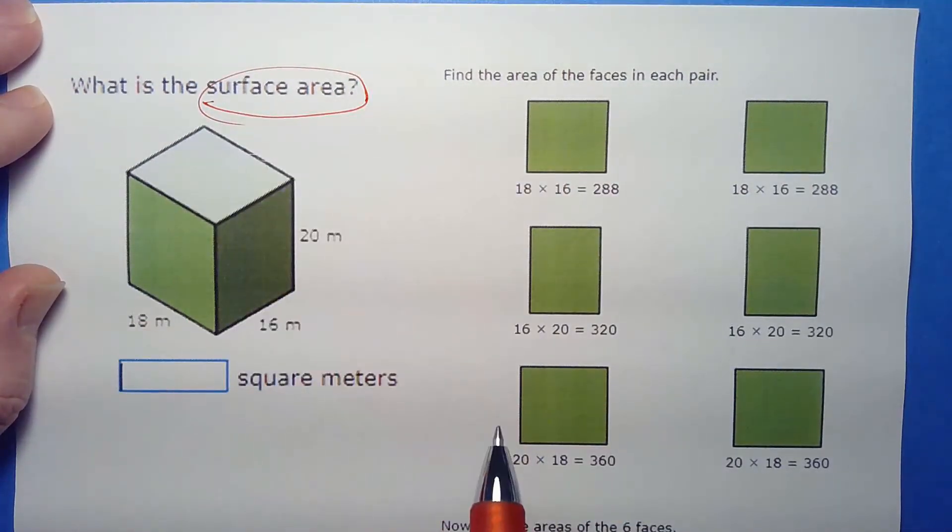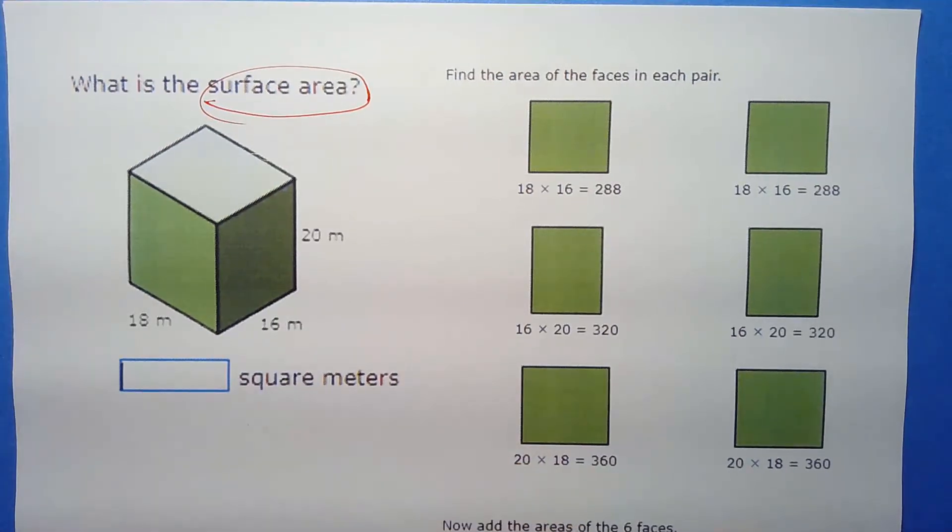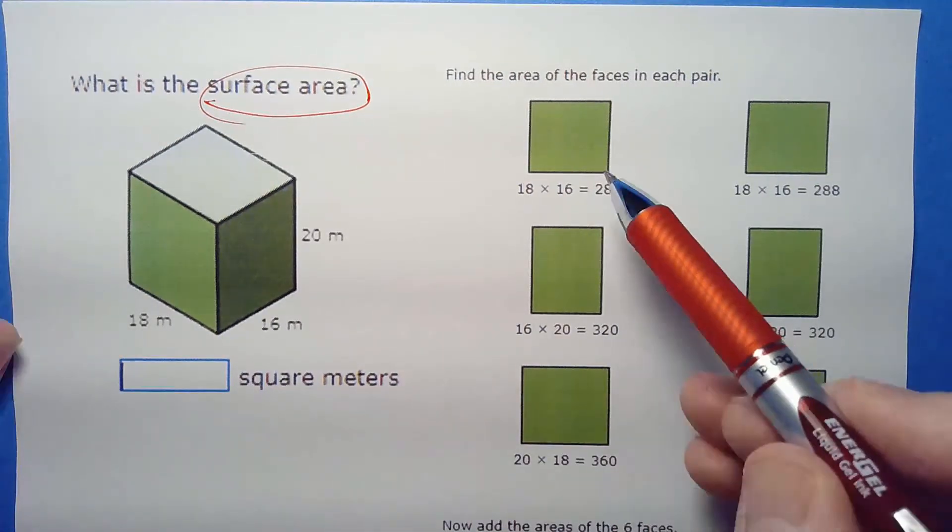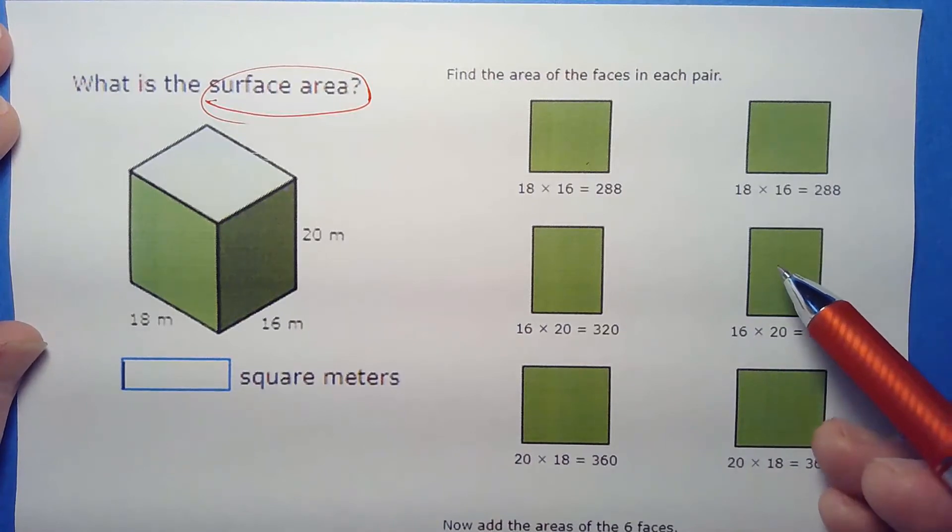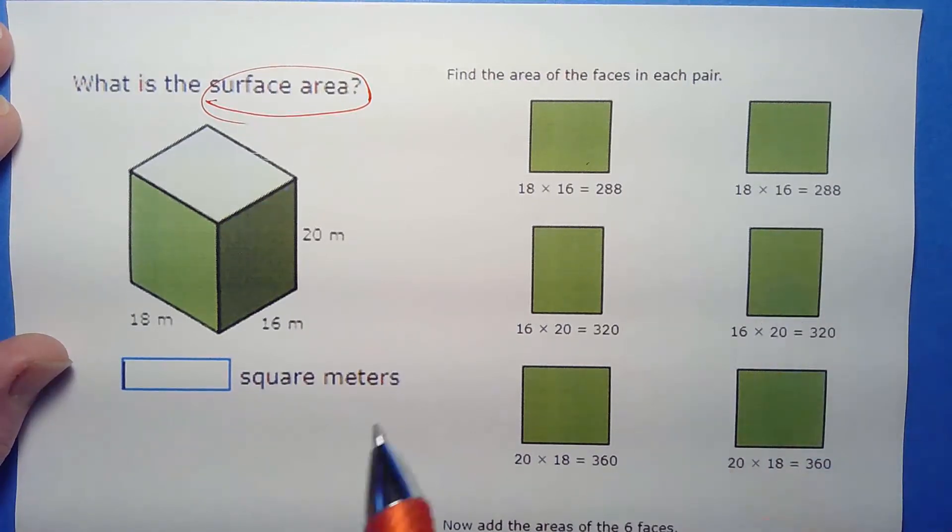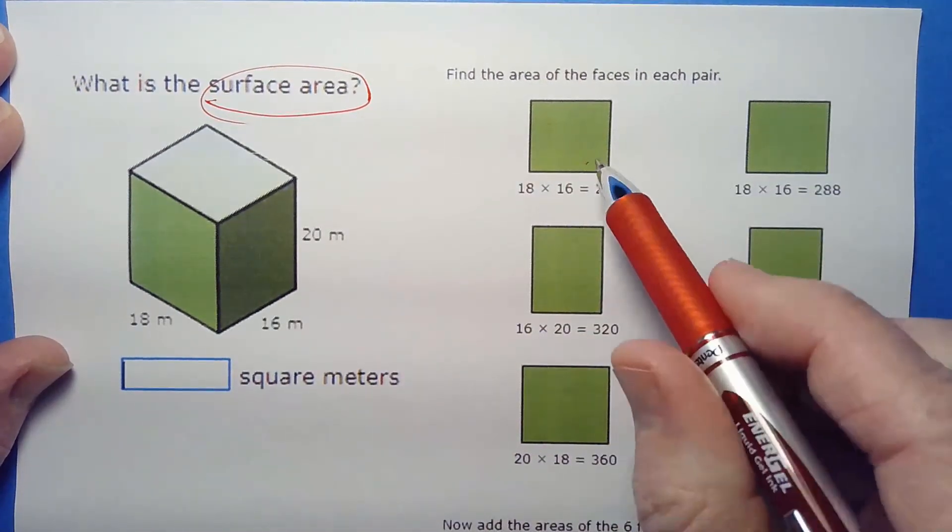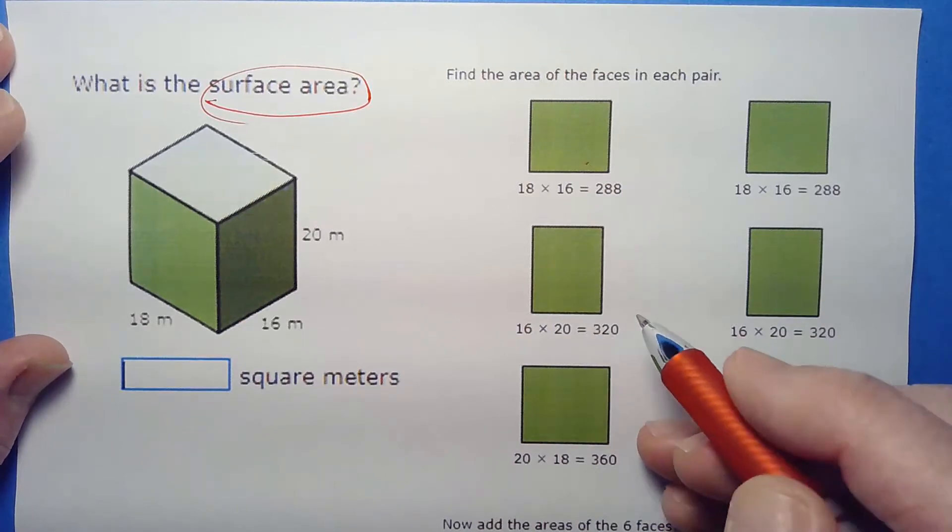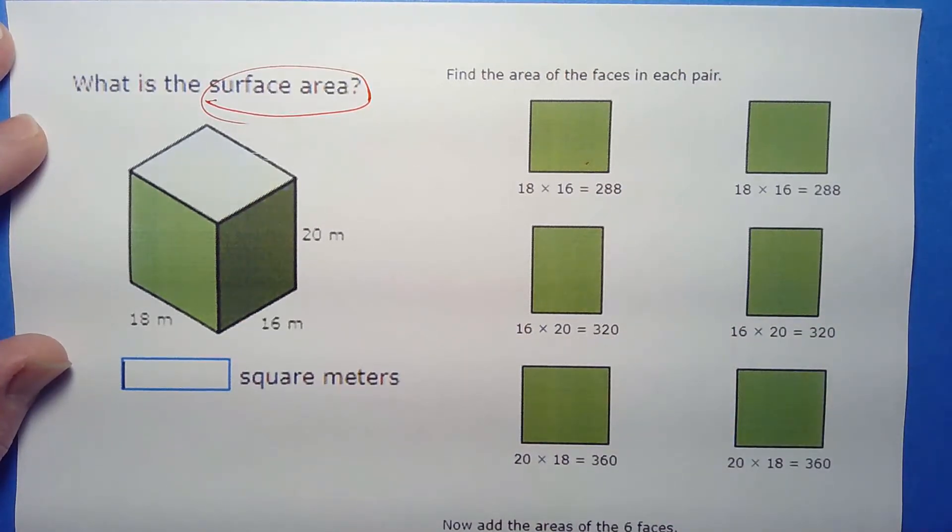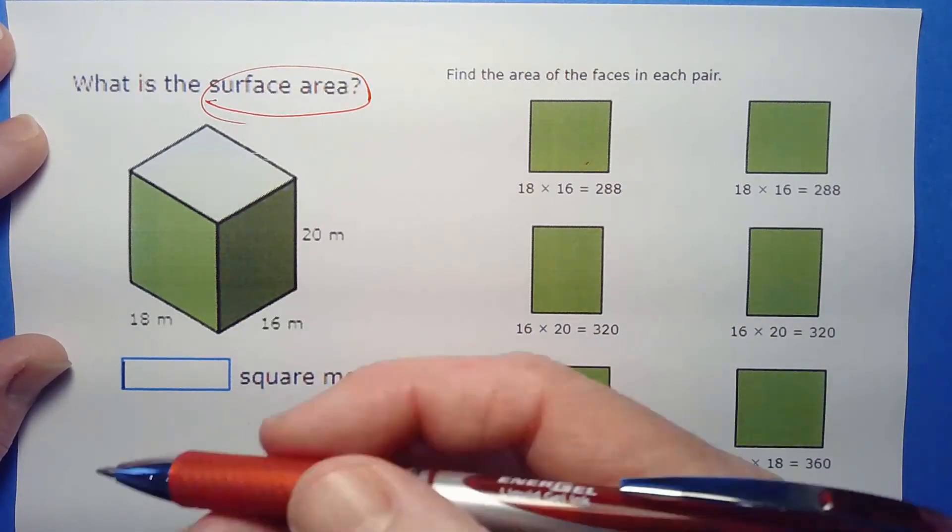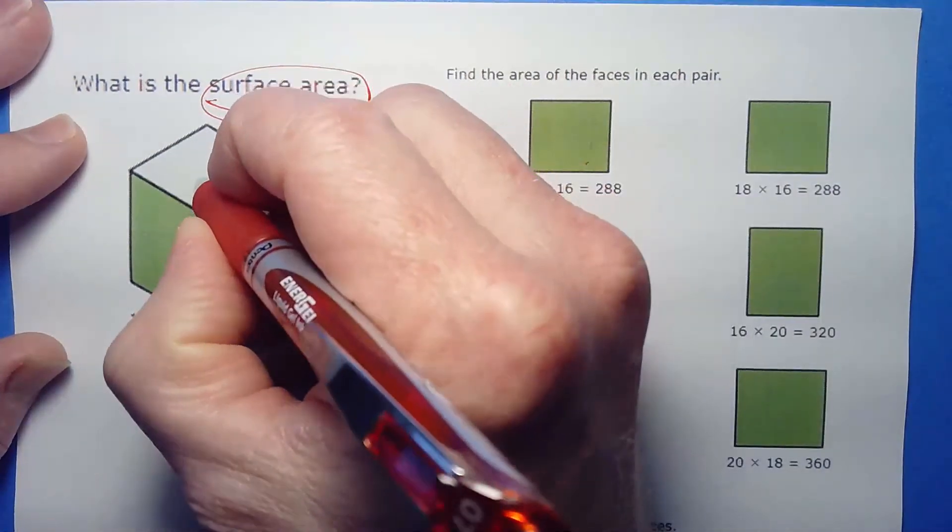Now with surface area, like I said before, sometimes you can think of it as kind of unfolding it as a net. In this case, this is surface area. You can also think of it just as breaking it up into pieces. If you were making this out of wood, you're probably gonna make a bunch of rectangles and nail them together.